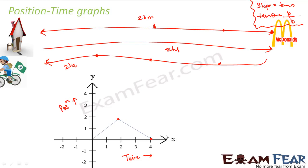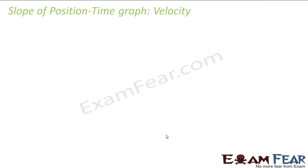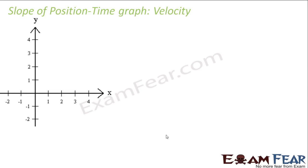The same scenario is plotted in two different ways: one representing distance versus time, and the other representing position versus time. Now let us see what the slope of the position-time graph depicts. The slope of the distance-time graph gave us speed. Similarly, the slope of the position-time graph gives us velocity, because position depends on direction — it is displacement, which is a vector quantity.